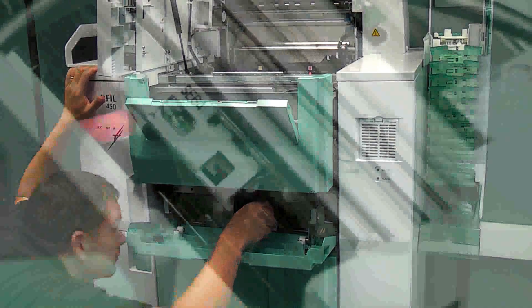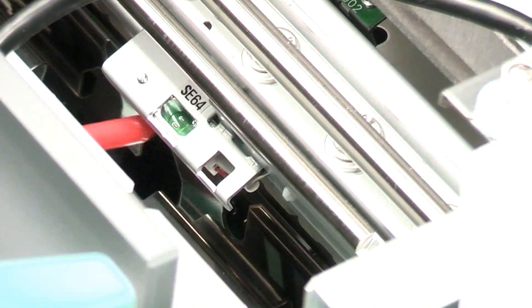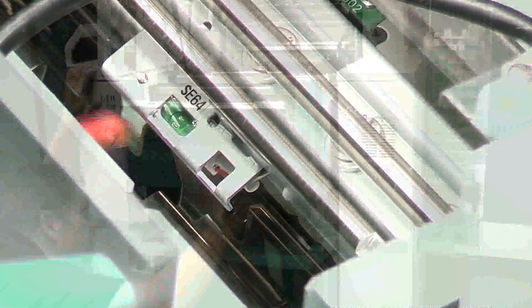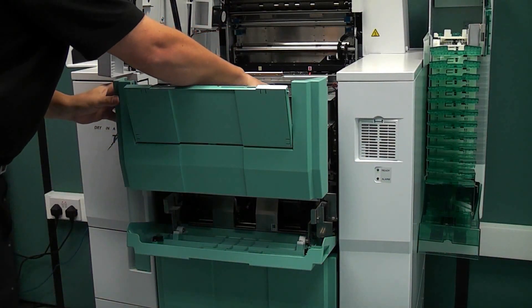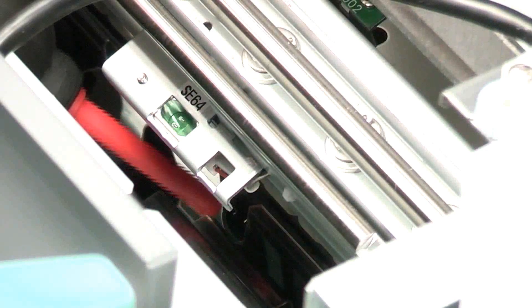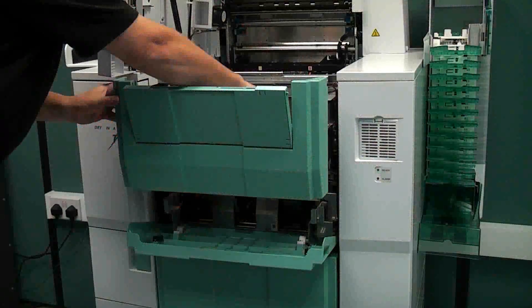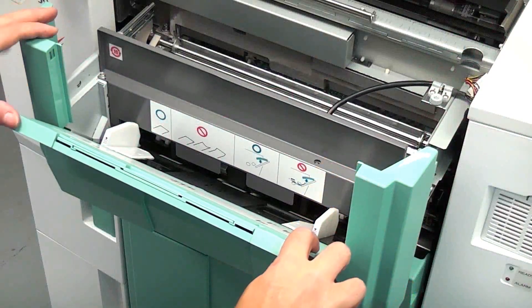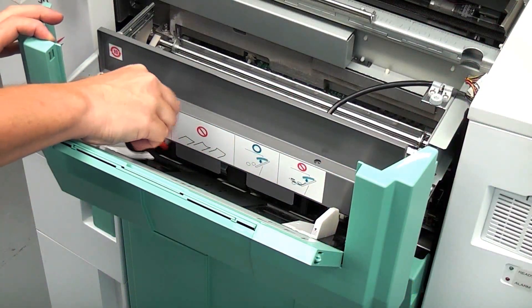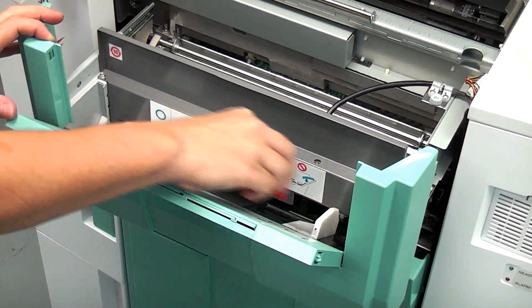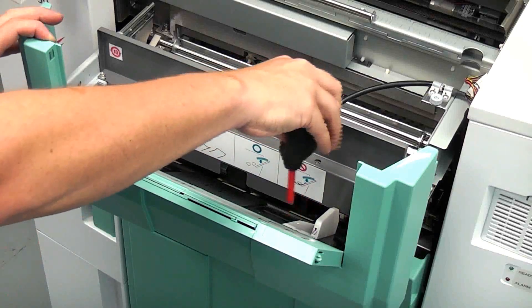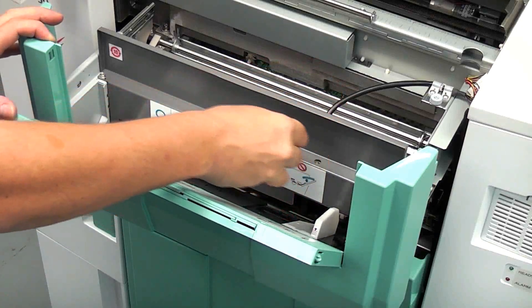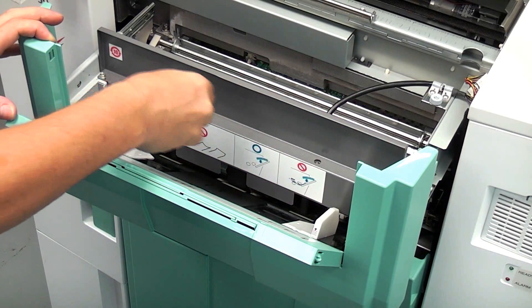Clean the multi-feed sensors with a blower brush. Clean the black sheet supply rollers with a blower brush. Clean the sheet supply tray, guides and multi-feed prevention pads with a blower brush.